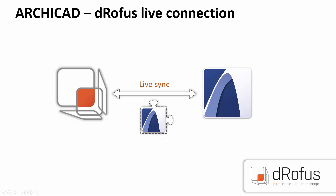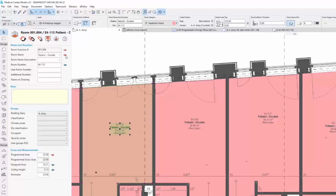DeRofis communicates with ArchiCAD bidirectionally through a connection add-on. You can capture and organize client planning requirements, validate client requirements inside of the BIM tool, and review the DeRofis database within ArchiCAD. With the help of the built-in property panel tool, you can check DeRofis elements in ArchiCAD.